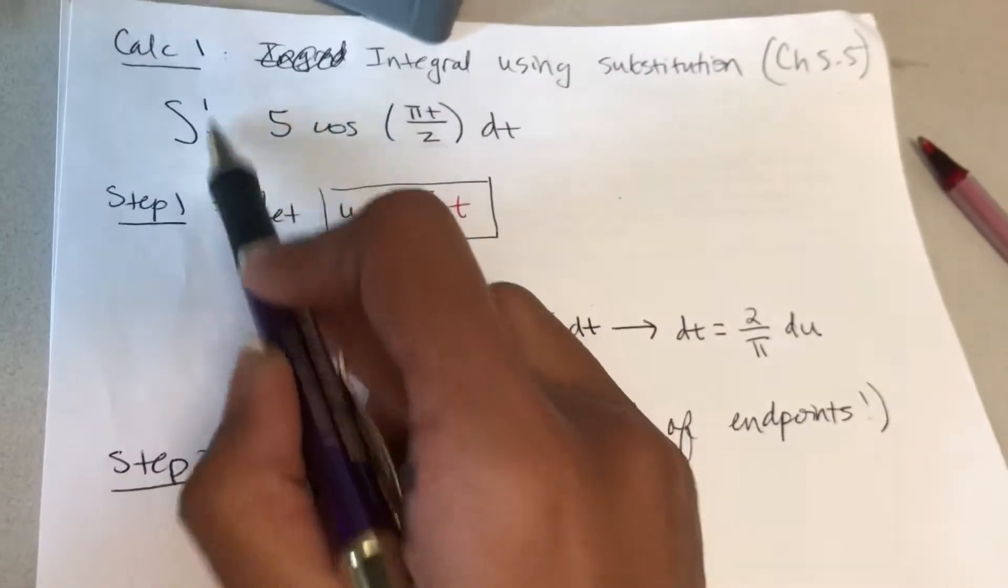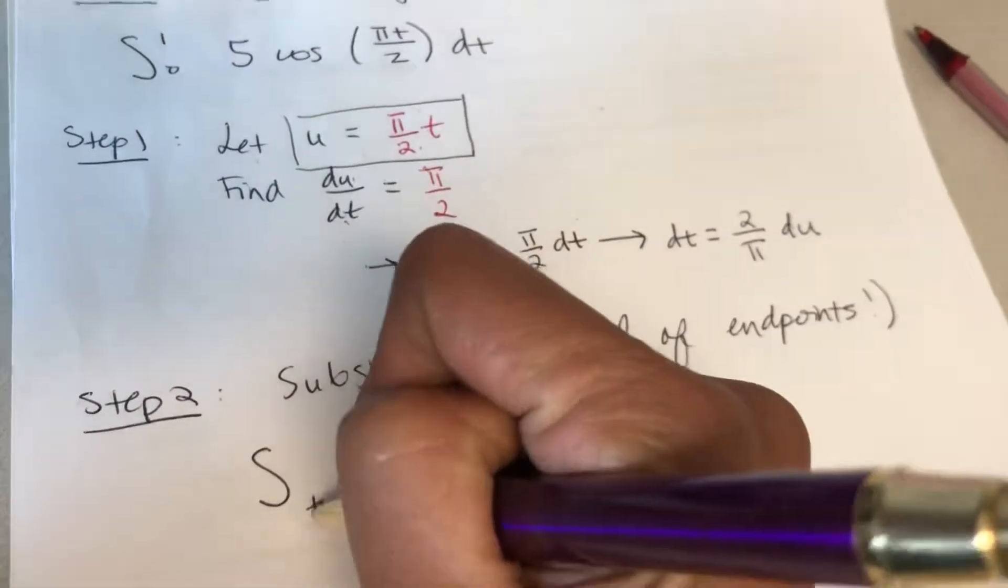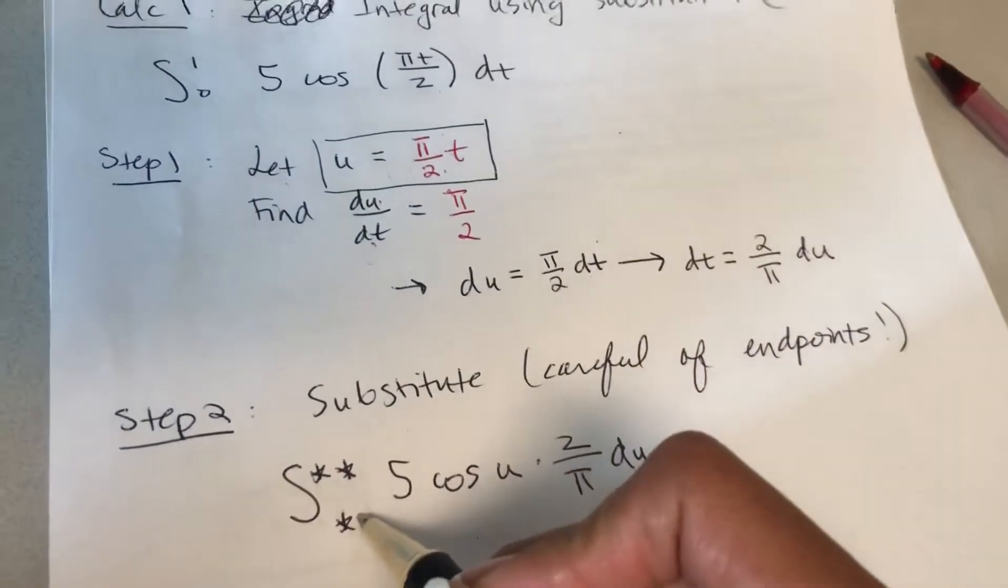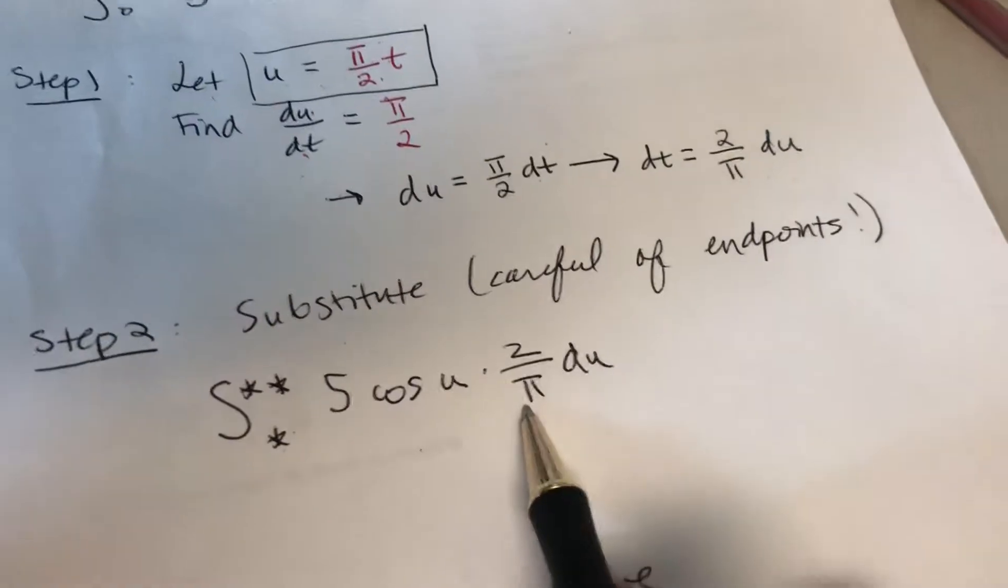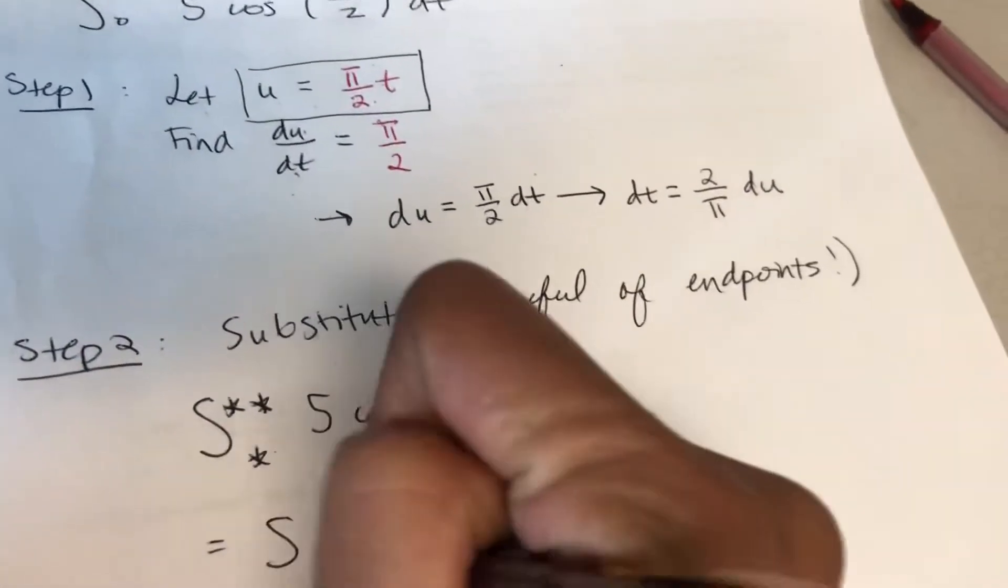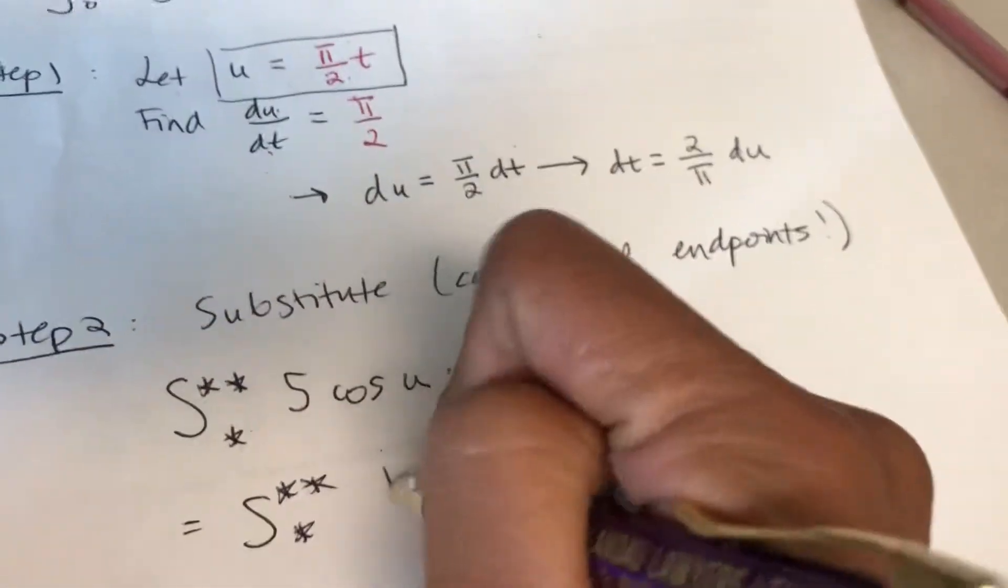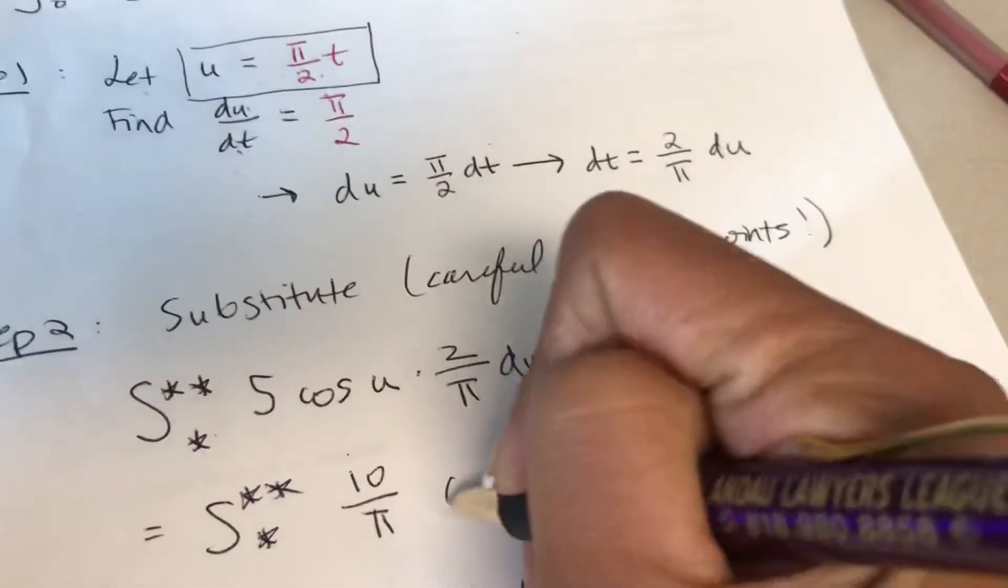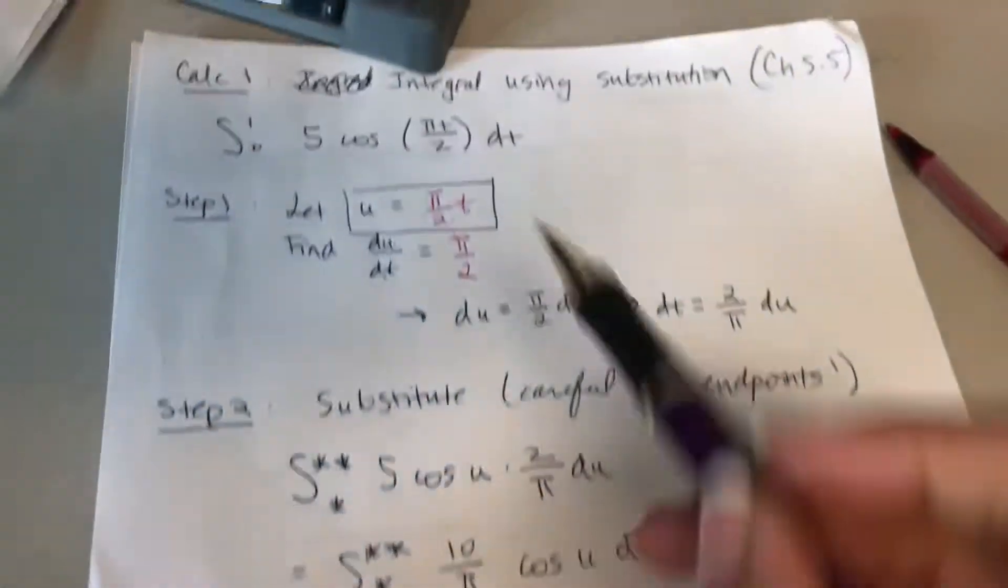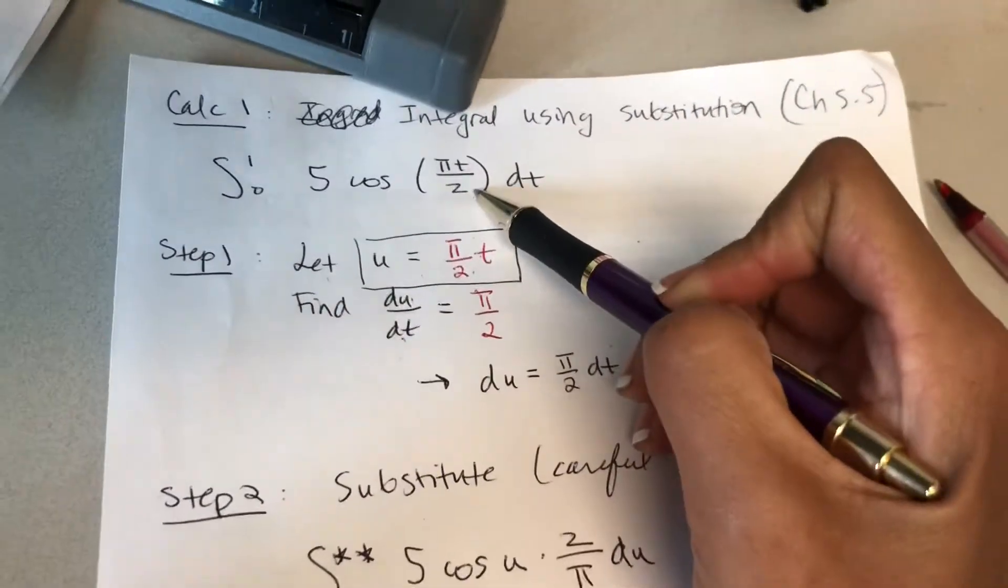I showed you two methods in class that you can do. I personally prefer the one where you put an asterisk, the star and double star, as temporary placeholder endpoints. Once you do that, I'm gonna make this look a little bit prettier. I'm gonna have 5 times 2 is 10 over pi cosine u du. Now notice how simple this integral looks compared to what we originally started off with.